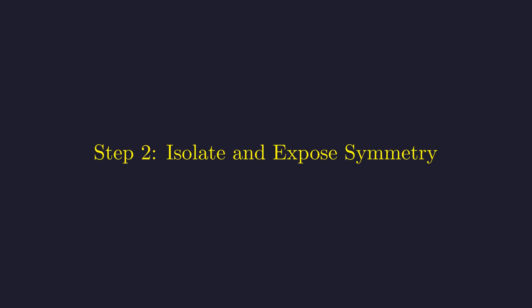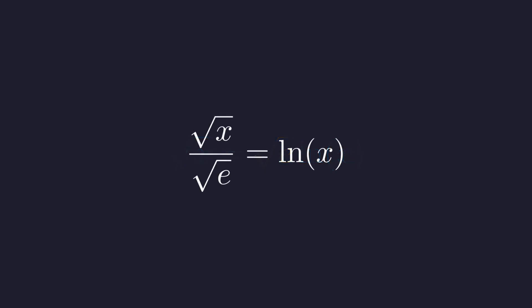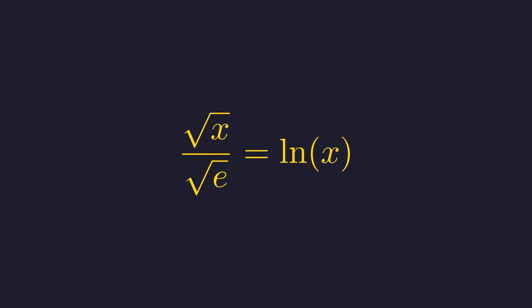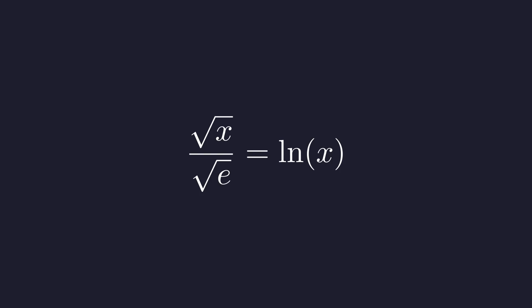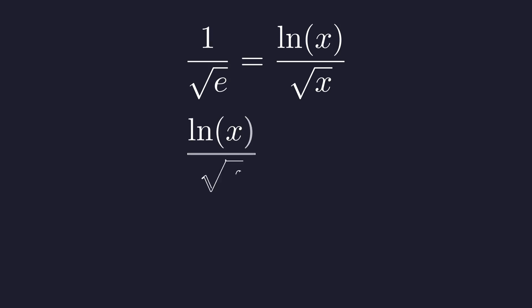To find solutions, we'll first isolate the variable terms to reveal the equation's deeper structure. Starting from our simplified equation, our first step is to divide both sides by the square root of e to begin grouping the constants. This moves all constant terms to the left. Now, to isolate the constant, we divide both sides by the square root of x. This isolates a function of x on the right and a pure constant on the left.